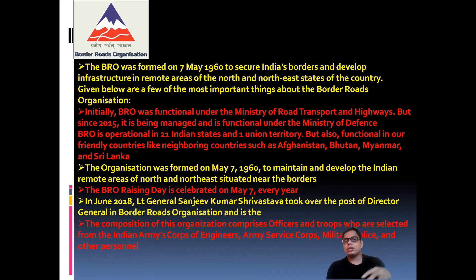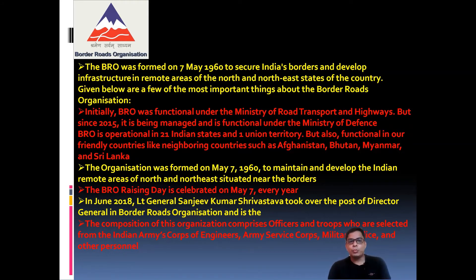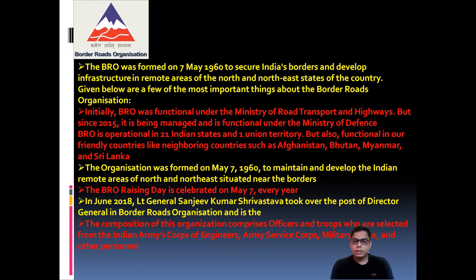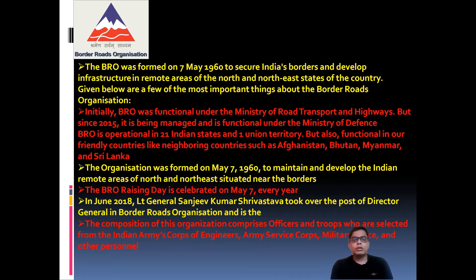BRO is sanctioned to operate in 21 states and one union territory. Separate funds are sanctioned by the central government for road construction. BRO also functions in friendly neighboring countries such as Afghanistan, Bhutan, and Myanmar for their import and export purposes. The northern and northeastern areas have very harsh climatic conditions with frequent flooding, so BRO maintains and repairs roads that are washed away by floods.